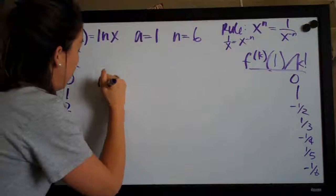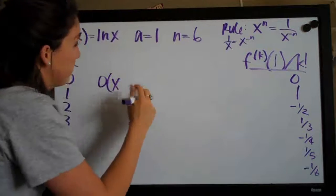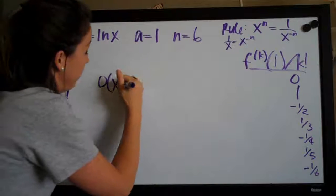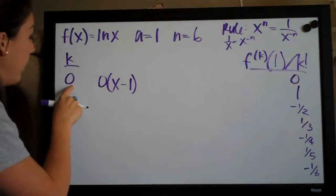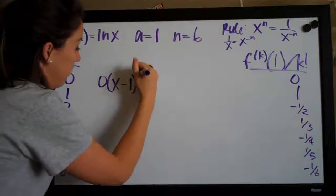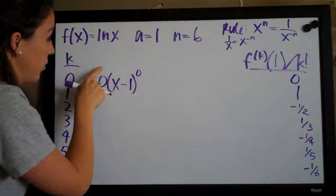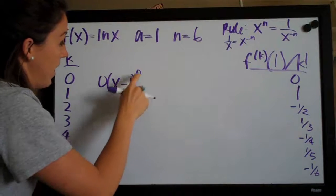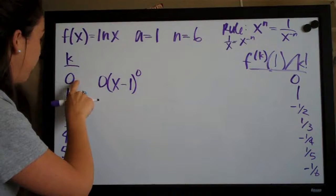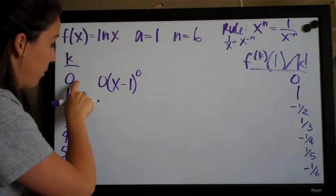So we have zero times x minus whatever a is, so in this case one, raised to whatever's in this column here, k. So this is the coefficient, this is a, and then this is the exponent, k.